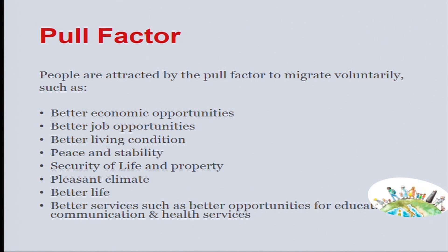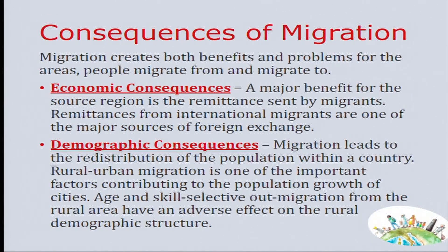We are moving on to the pull factors — factors which pull a person to a particular place or the destination place of migration. People are attracted by pull factors to migrate voluntarily, such as better economic opportunities, better job opportunities, better living conditions, peace and stability, security of life and property, pleasant climate, better life, better services such as better opportunities for education, communication, and health services. These are the major push-pull factors of migration.